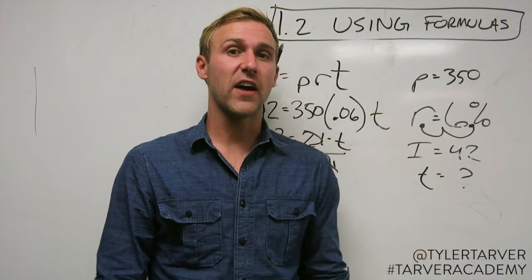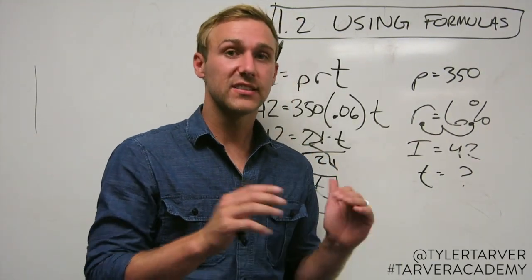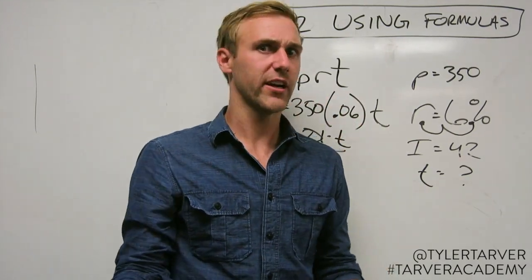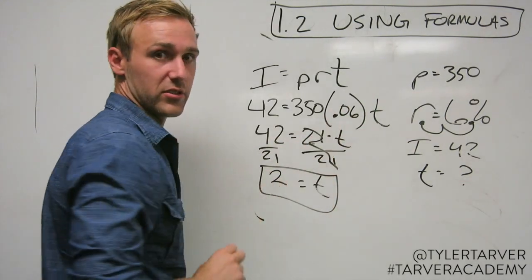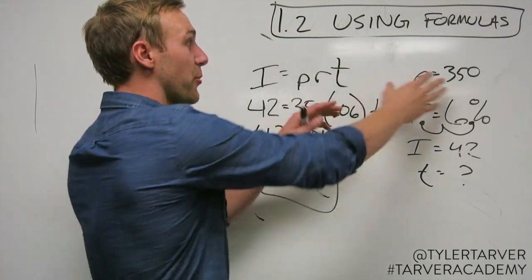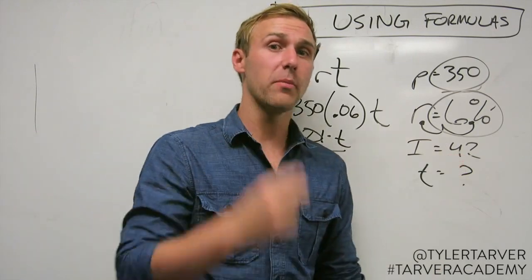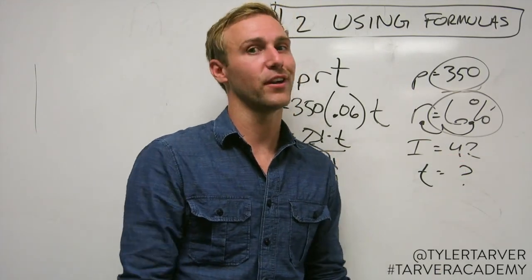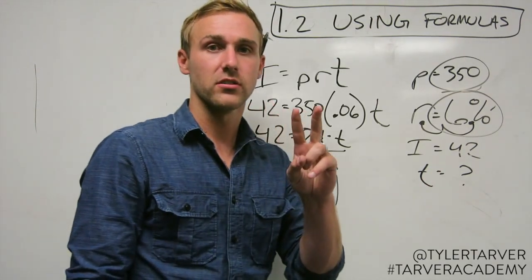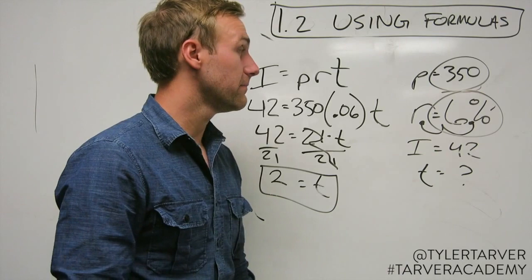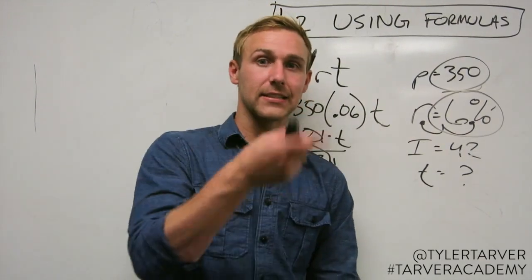So we plugged in what we knew to find what we didn't know. A good thing to do when you're working with formulas: sit back, look at your problem, and figure out what you just figured out. Looking at this formula, it's going to take me two years — if I have 350 bucks and I put it in the bank at 6% interest, it will take two years to earn 42 bucks. That's how you use formulas. Holla at your boy, Tyler Tarver. Tyler Tarver dot com. Subscribe. Bye.